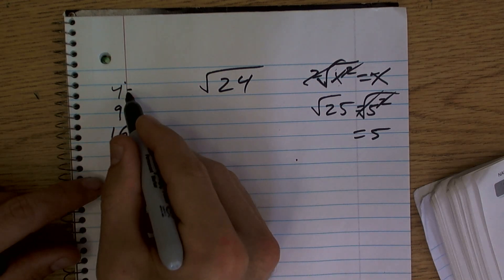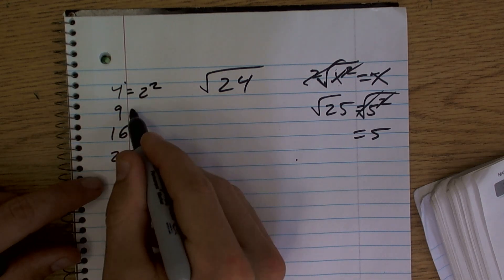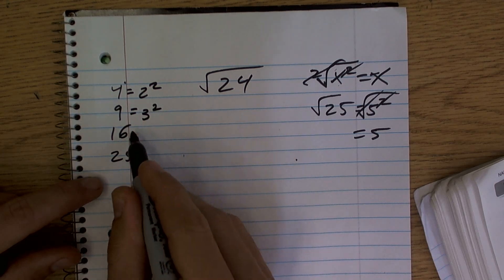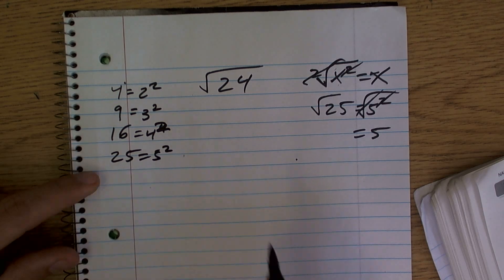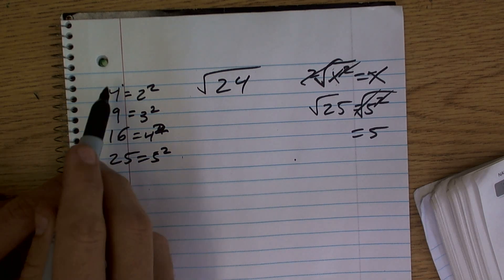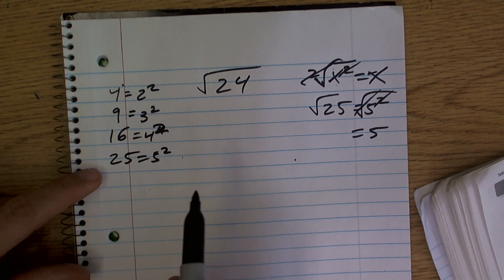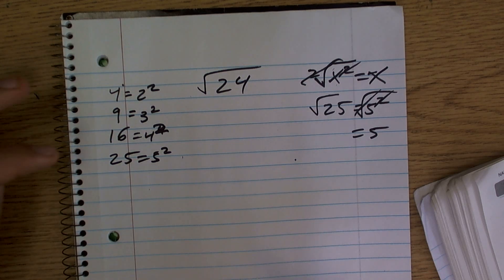So we know 4, that's equal to 2 squared. This is equal to 3 squared. That's equal to 4 squared. And that's equal to 5 squared. So I could take the square root of any of these numbers and I would get 2, 3, 4, 5. You understand how the canceling out would work?